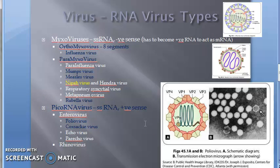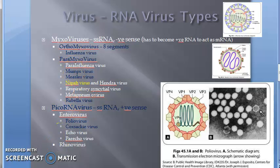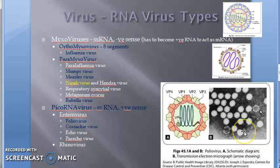So far, what we've learned: we are looking at RNA viruses. Under mixoviruses, we saw orthomyxovirus — example, influenza virus — and paramyxovirus — example, measles and mumps. Under picoRNA virus, we saw poliovirus, which is an enterovirus, and rhinovirus. Very good. Let us move on.